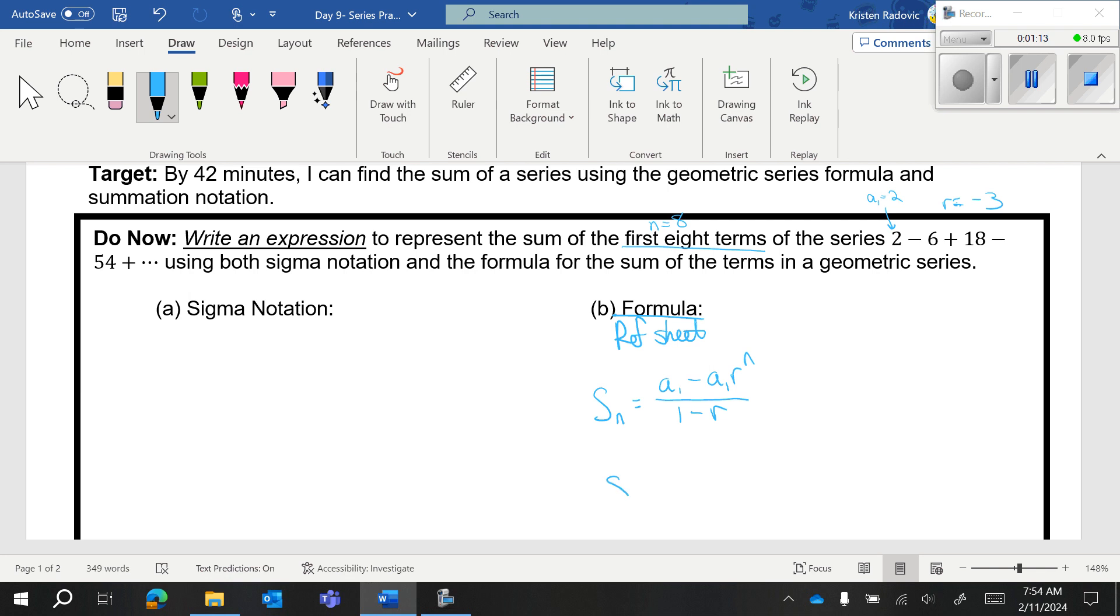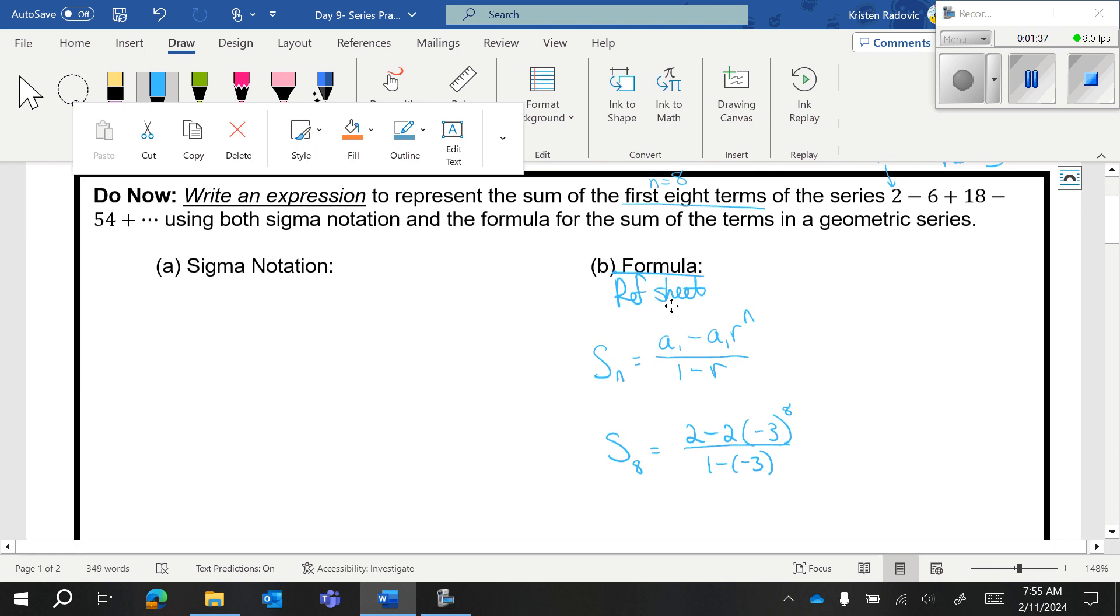That means with the formula S sub 8 equals A sub 1, which is 2, minus 2 times 1 minus R is negative 3 to the eighth power, please use parentheses, over 1 minus negative 3. If you would like to put 1 plus 3 on the bottom or just 4, go for it. But that is using the formula.